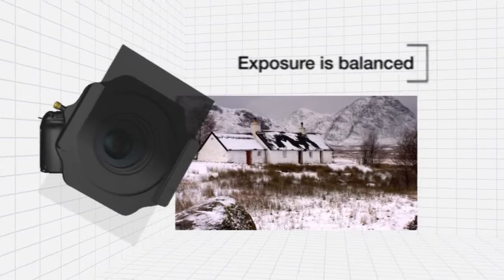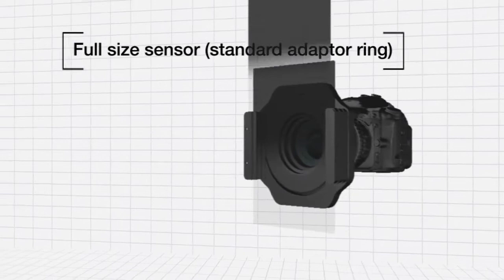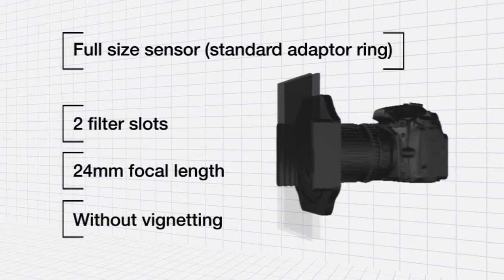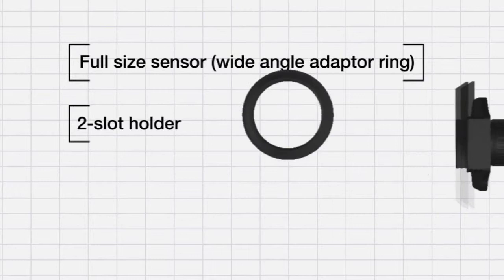As a guide, using a full-size sensor and a standard ring, you can use the filter holder with two filter slots and a focal length of 24 millimeters without vignetting. Using a cropped sensor, the focal length would be 18 millimeters.